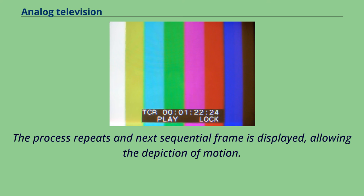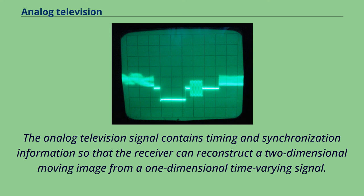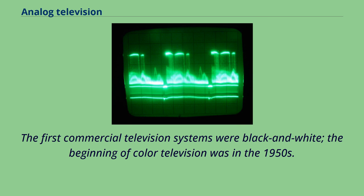The analog television signal contains timing and synchronization information so that the receiver can reconstruct a two-dimensional moving image from a one-dimensional time-varying signal. The first commercial television systems were black and white. The beginning of color television was in the 1950s.